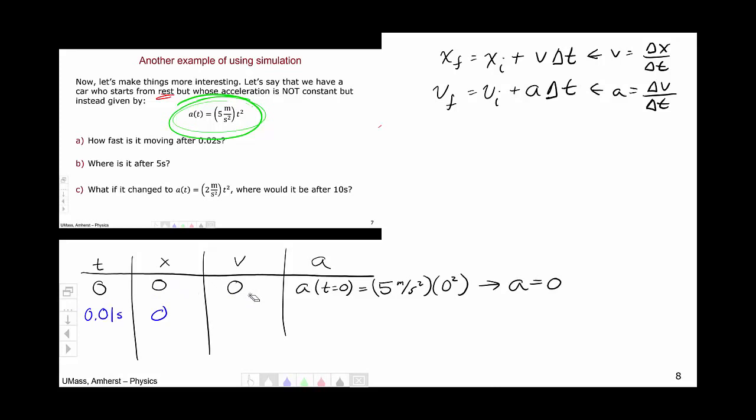Now let's do velocity. So we're going in here. Vi is zero. Looking at this equation here, Vi is zero, a is zero, and delta t is 0.01 seconds. So this goes to zero as well. Alright, is this ever going to go anywhere? Well, it hasn't yet, but the acceleration is zero, so nothing's happening.